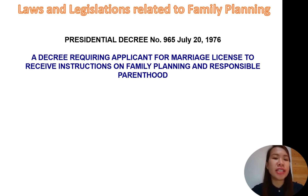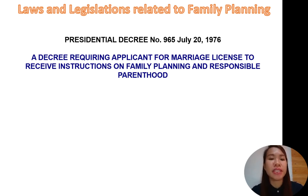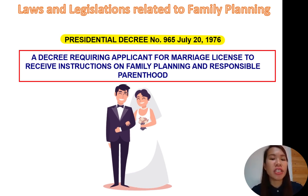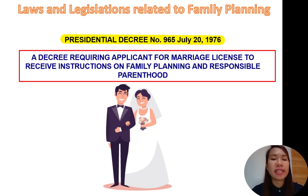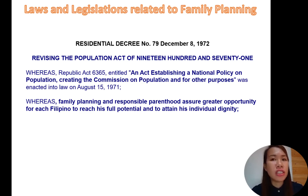At this portion of the lecture, we are going to discuss the presidential decrees, Republic Acts, and executive orders — the laws related to family planning and why we have family planning in the Philippines. First, we have Presidential Decree number 965, dated July 1976. This is a decree requiring the applicant for a marriage license to receive instructions on family planning and responsible parenthood. So when you apply for a marriage license, there will be a training or seminar on family planning and responsible parenthood — it is actually a law, Presidential Decree number 965.